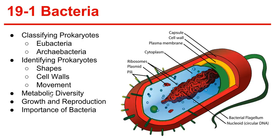The next type of bacteria is an autotroph. Photoautotrophs use light energy to convert carbon dioxide and water to carbon compounds and oxygen in a process similar to photosynthesis. Then we have chemoautotrophs, which make organic carbon molecules from carbon dioxide and don't need light as an energy source.